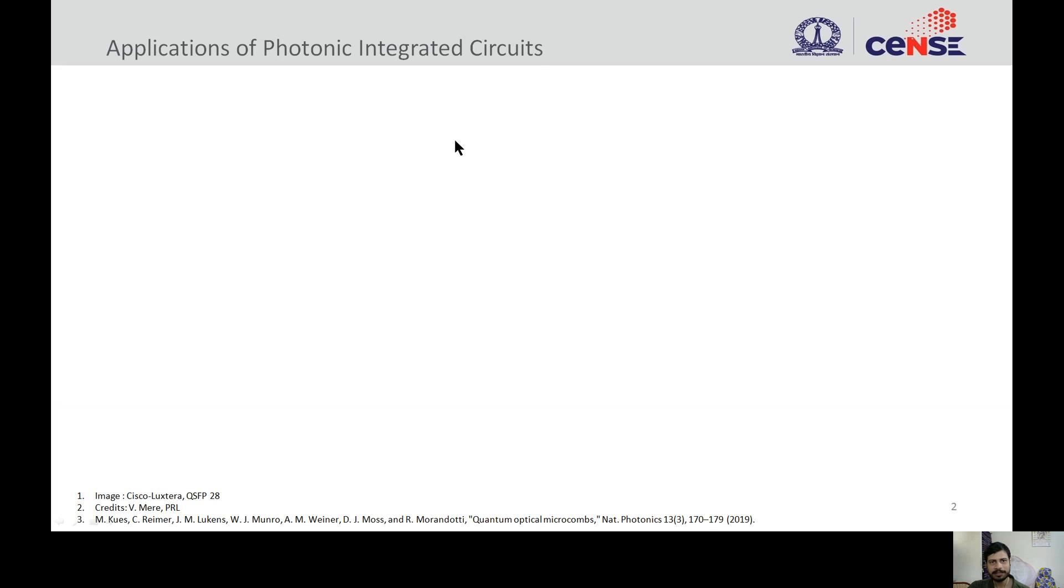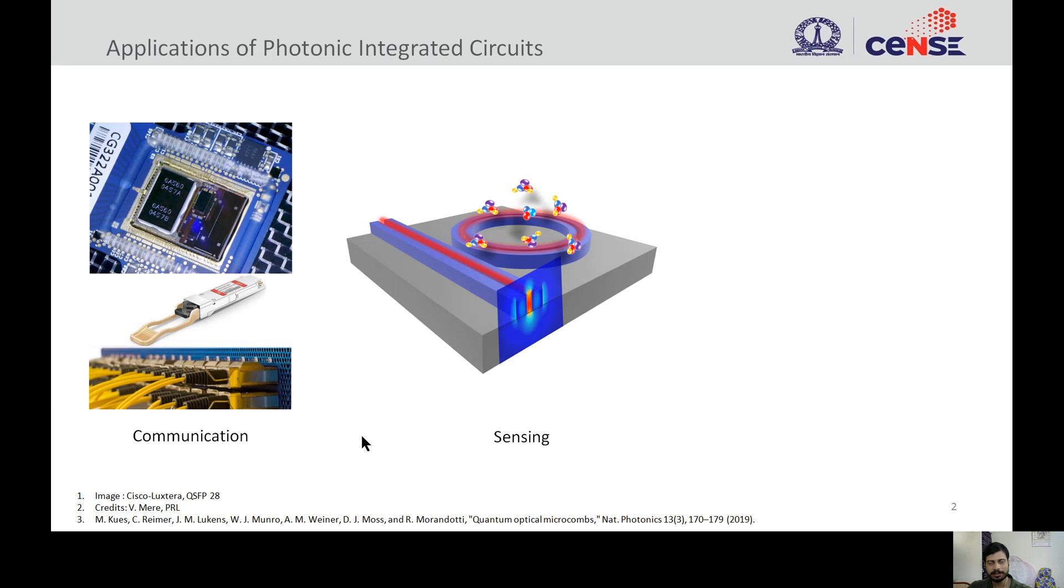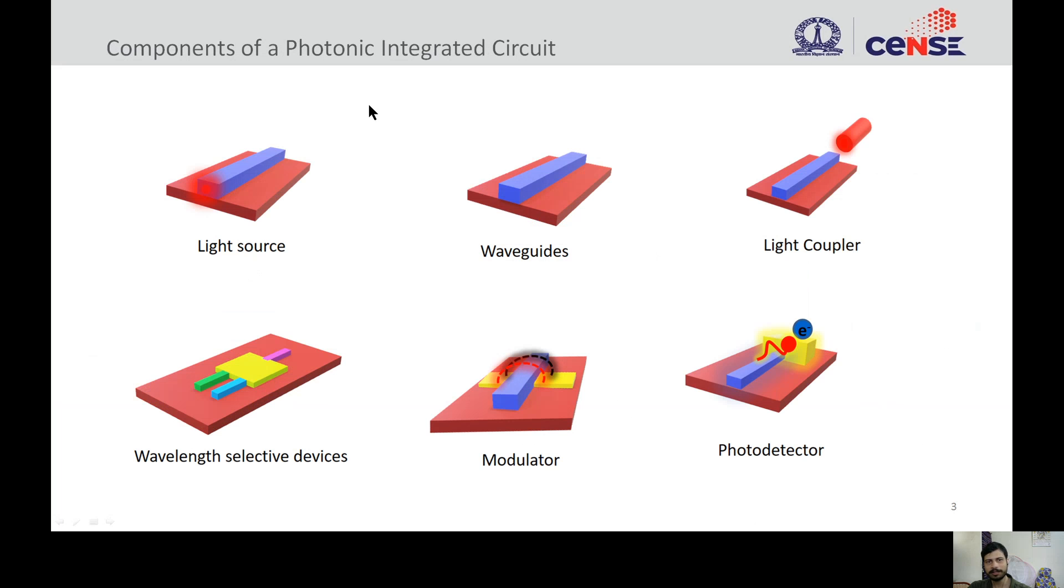Photonic integrated circuits are versatile and used for various applications like high-bandwidth communication, sensing of various analytes, and recently in quantum photonics. Photonic ICs comprise light sources both external and integrated, waveguides to connect various components in the circuit, light couplers to couple light from external sources into the waveguide, wavelength selective devices for multiplexing and demultiplexing, modulators to modulate the carrier, and finally photodetectors for optical to electronic conversion.